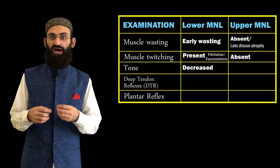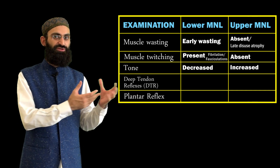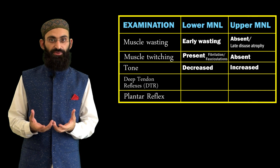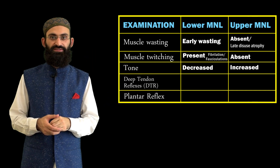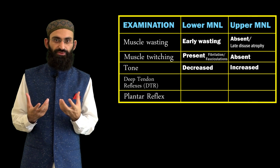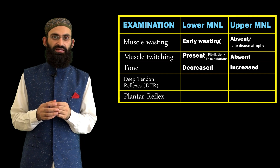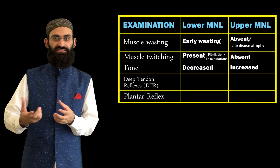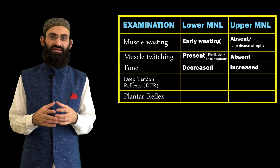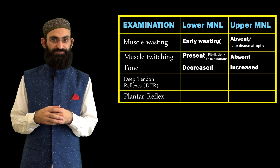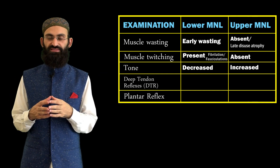Muscle tone is decreased in lower motor neuron weakness, called hypotonia, and increased in upper motor neuron weakness, called hypertonia. In corticospinal or pyramidal tract lesions, the hypertonia is velocity-dependent — initially there is resistance and then it suddenly decreases. This type of hypertonia is called clasp-knife spasticity.